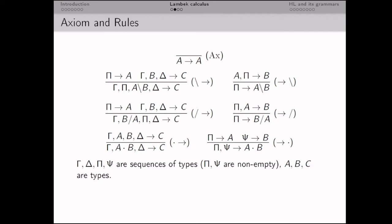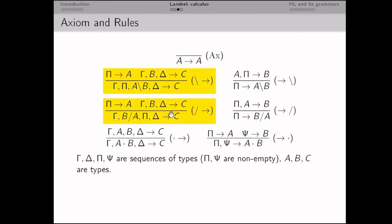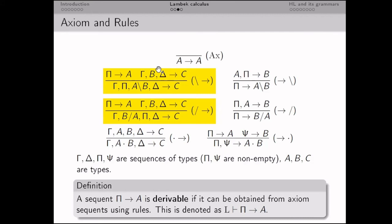The Lambek calculus operates on strings — these are extended reduction laws. If we replace Π by A, this will be an axiom, and we will have exactly the reduction of A, A left-division B, and B in the premise. A sequent is derivable if it can be obtained from axioms using rules, as in any logic.